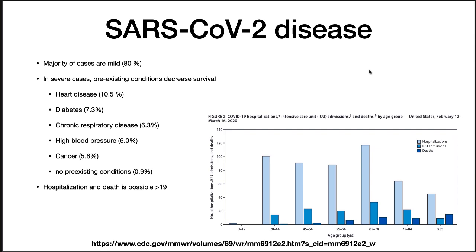The majority of cases of SARS-CoV-2 are mild, with 80% never progressing to severe illness. In severe cases, pre-existing conditions decrease survival. The CDC examined data from reports of 2,449 patients; 508 required hospitalization, and the rate of hospitalization is significant for all age groups above 20. Deaths were lower in the younger age groups and increased over time. It doesn't seem to be age so much as the accumulation of pre-existing conditions — heart disease, diabetes, chronic respiratory disease, etc. However, even if you don't have any pre-existing conditions, your risk of death after infection is 0.9%.